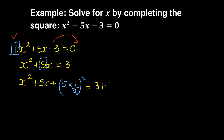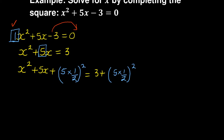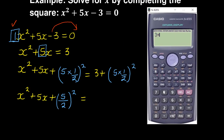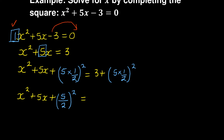Whatever we do on the left side we must also do on the right side, which means adding (5 × 1/2)² to the right. Simplifying the right side with a calculator: 3 + (5/2)² = 37/4. So we now have x² + 5x + (5/2)² = 37/4.